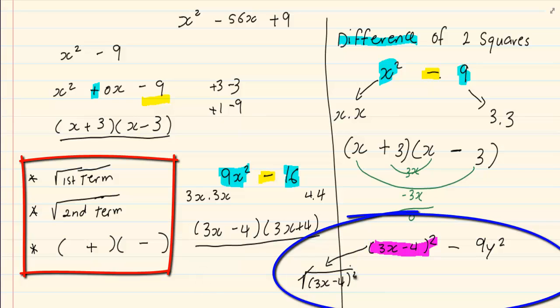Because the roots cancel out with the square and you are left with 3x minus 4. Now that was the first term. Then we will say subtract. What is the root of 9y squared? It is 3y times 3y. So it would be minus 3y.